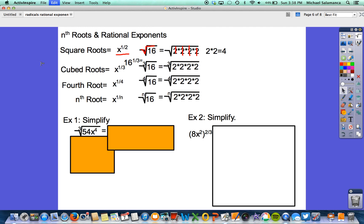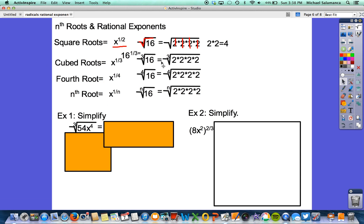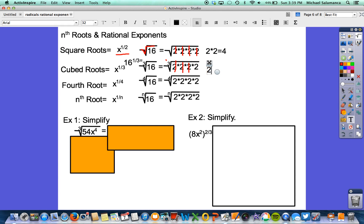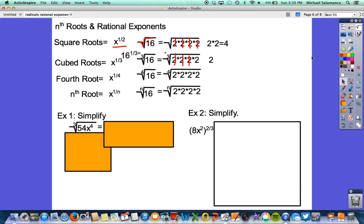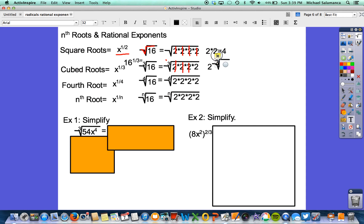So 16 to the one-third power is the same thing as the cubed root of 16. We can simplify that. And again, because it's a 3 out here on the radical, we're looking for three things. So three 2's, write one down, and then we're looking for the cubed root of 2 because that's what's left over in our cubed root.